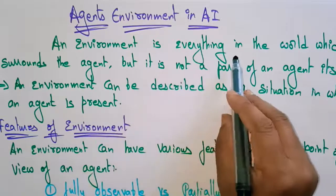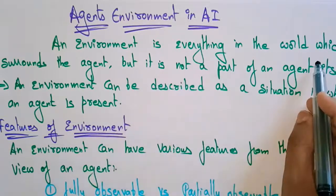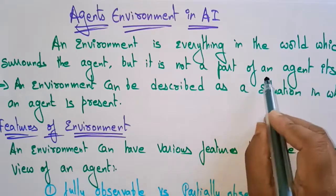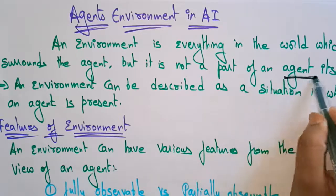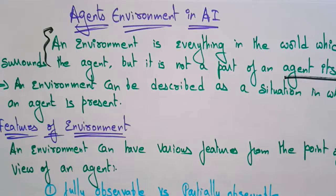An environment is everything in the world which surrounds the agent, but it is not a part of the agent itself. We have to remember this point. Environment is nothing but whatever the Artificial Intelligence machine is able to see, and it works based on the conditions of the environment.